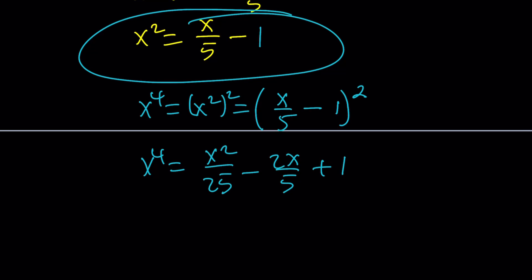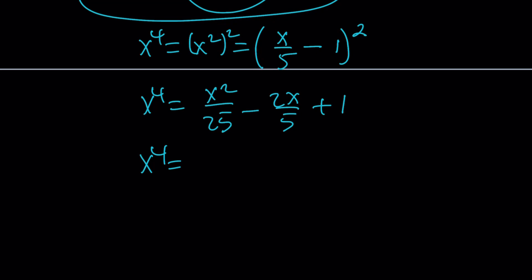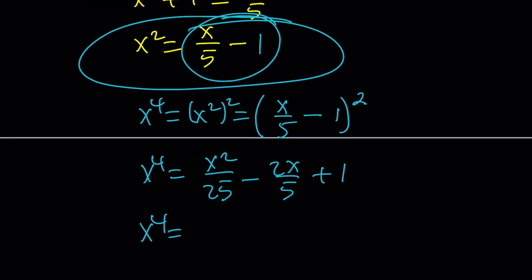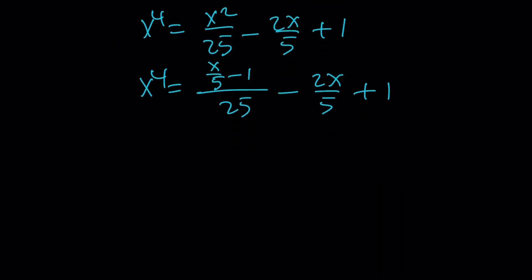And x to the fourth is just going to be x squared over 25 minus 2x over 5 plus 1. And then, of course, x squared can be replaced with this again. We can keep doing it. And if you replace it with x over 5 minus 1, we're going to have to divide that by 25. And then subtract 2x over 5 from it. And plus 1. And then if you make a common denominator, you're going to get x minus 5.